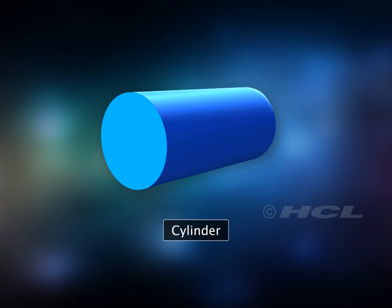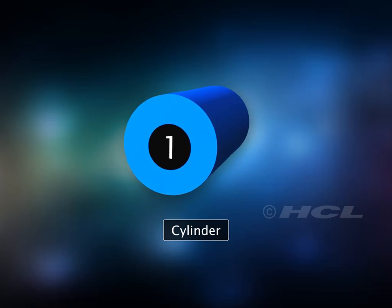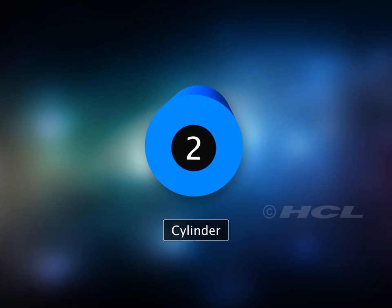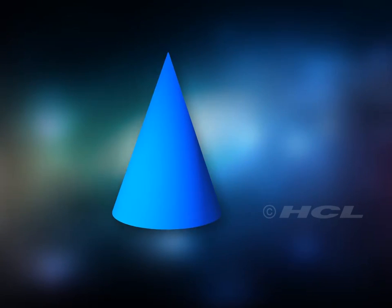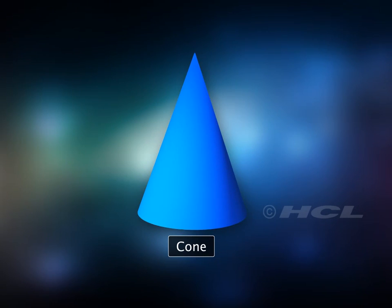A cylinder has one curved surface and two identical flat ends that are circular. A cone is a solid shape that tapers from a circular flat base to a point.